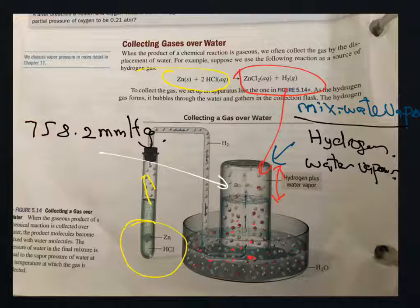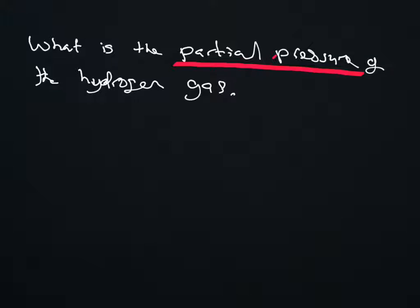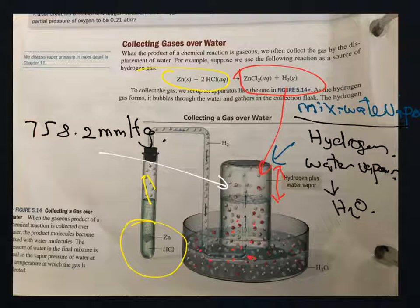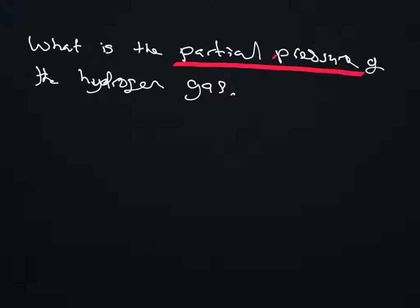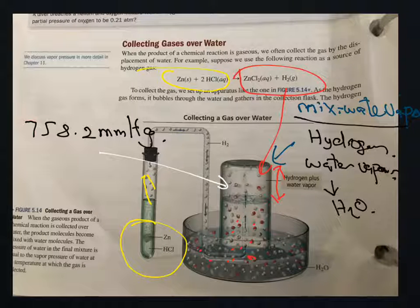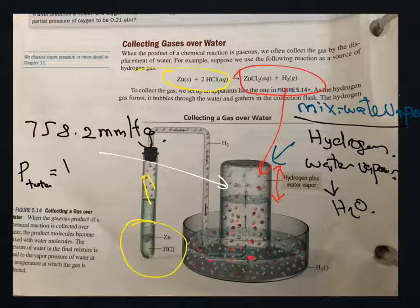It contains water vapor inside with the hydrogen. We know hydrogen is a gas and water vapor, H2O, is a different molecule. So if they give a question asking for the partial pressure of the hydrogen gas, we use the equation: P total equals partial pressure of hydrogen plus partial pressure of water vapor, H2O.